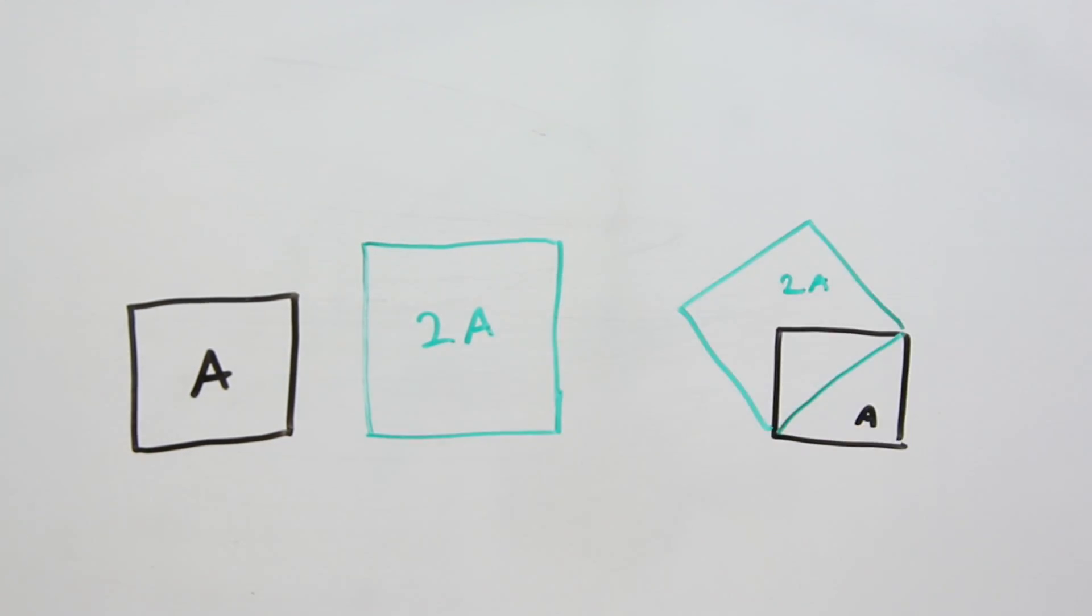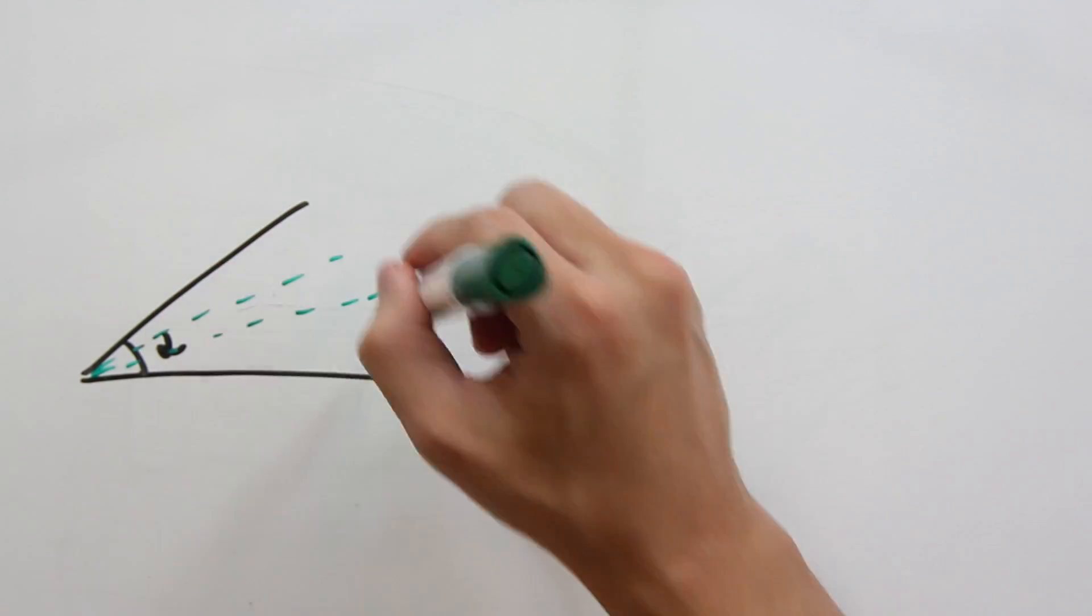There is also a simple construction to solve this one. But there are questions that cannot be solved with straight edge and compass. One example is the trisection of an angle.